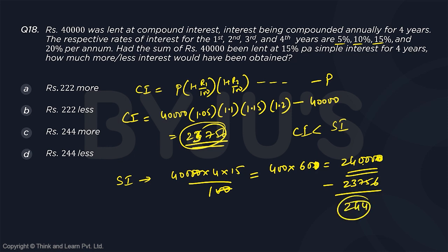Look at the question carefully because there are options with both more and less. You have to be very careful about how much more or less. Had the sum of 40,000 been lent at 15% simple interest, you would have got 244 more. Therefore, it is option C.